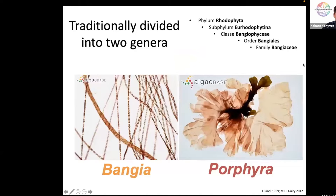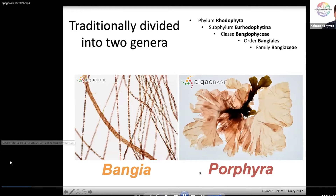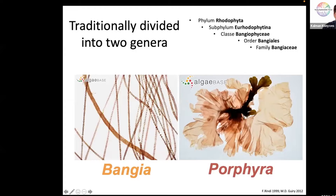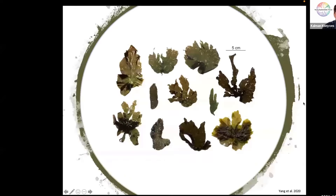Bangiaceae are a family of macroalgae or seaweed, traditionally divided into two genera: Bangia, with unbranched filamentous thalli, and Porphyra, with laminar thalli. This morphology of the gametophyte alternates with the microscopic sporophyte that grows inside shells called conchocelis.